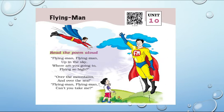'Over the mountains and over the sea — flying man, flying man, can you take me?' The child is asking the flying man to take him along. The child wants to go over the mountains and over the sea. So in this poem, the child is talking to the flying man.